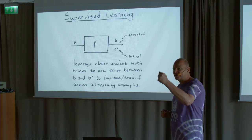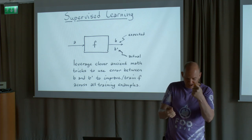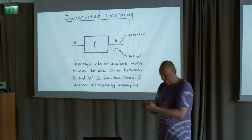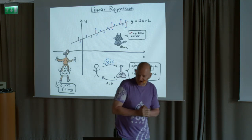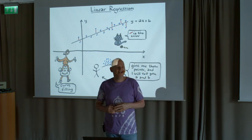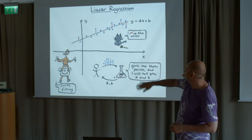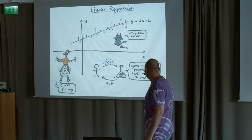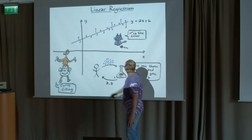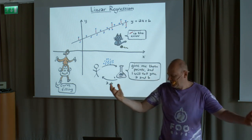We look at the answer the machine gives us, and compare it to the expected answer. We're trying to minimize the error. With humans, if your program doesn't compute the expected result, you get fired. Here we're trying to minimize the error by making the function better. Let's look at a very simple form of machine learning: linear regression — something everybody probably did in high school physics, making measurements and fitting a line through the points. This is our task, our magic device. We give it a bunch of these points, and it needs to tell us A and B, and then our program is done.